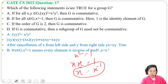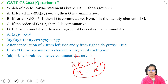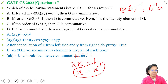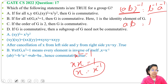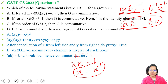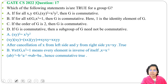We know that (ab)⁻¹ equals b⁻¹a⁻¹. Since every element is its own inverse, we can replace (ab)⁻¹ with ab, b⁻¹ with b, and a⁻¹ with a. So we get ab equals ba, which is the commutative property. Hence Option B is true — G is commutative.